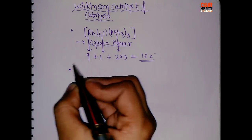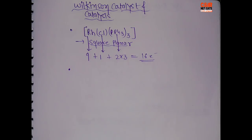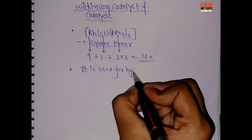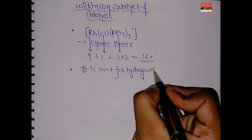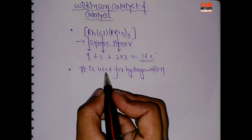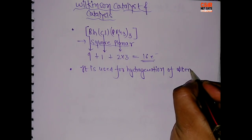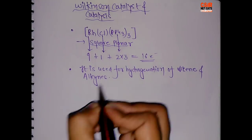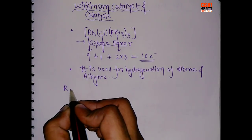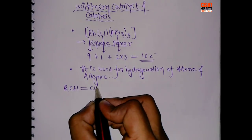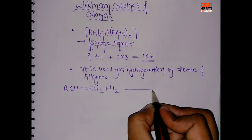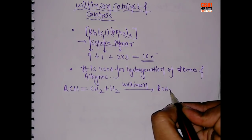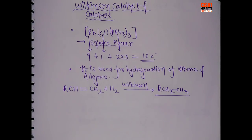The second point is, what is the use of this Wilkinson Catalyst? It is used for hydrogenation of alkenes and alkynes. Let's say I write a basic equation: RCH=CH2, addition of hydrogen in the presence of Wilkinson catalyst, then we will get RCH2CH3.